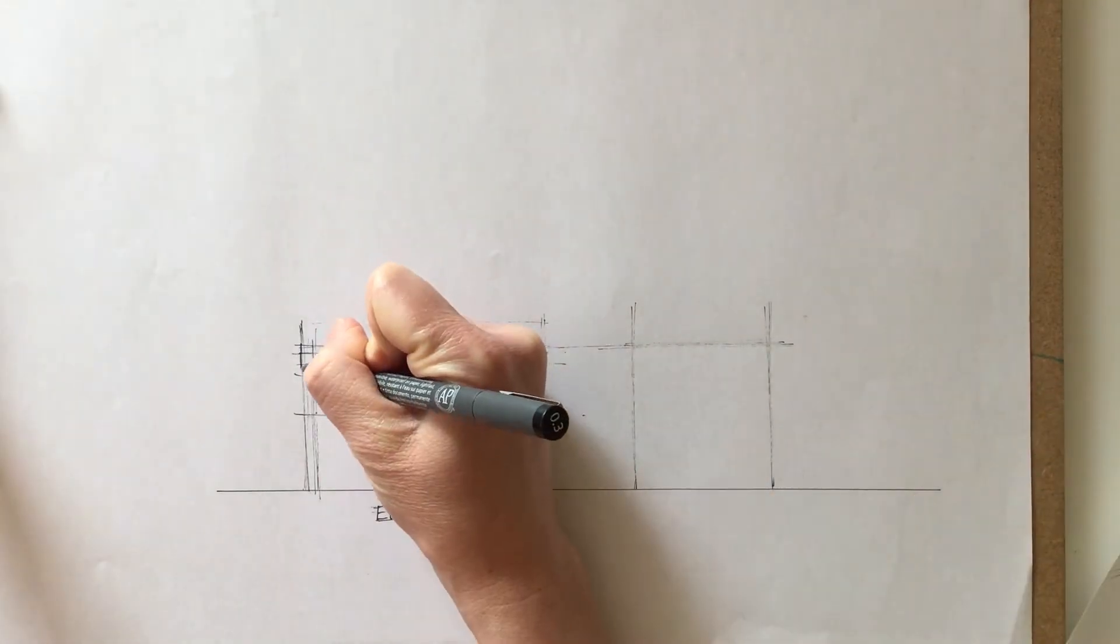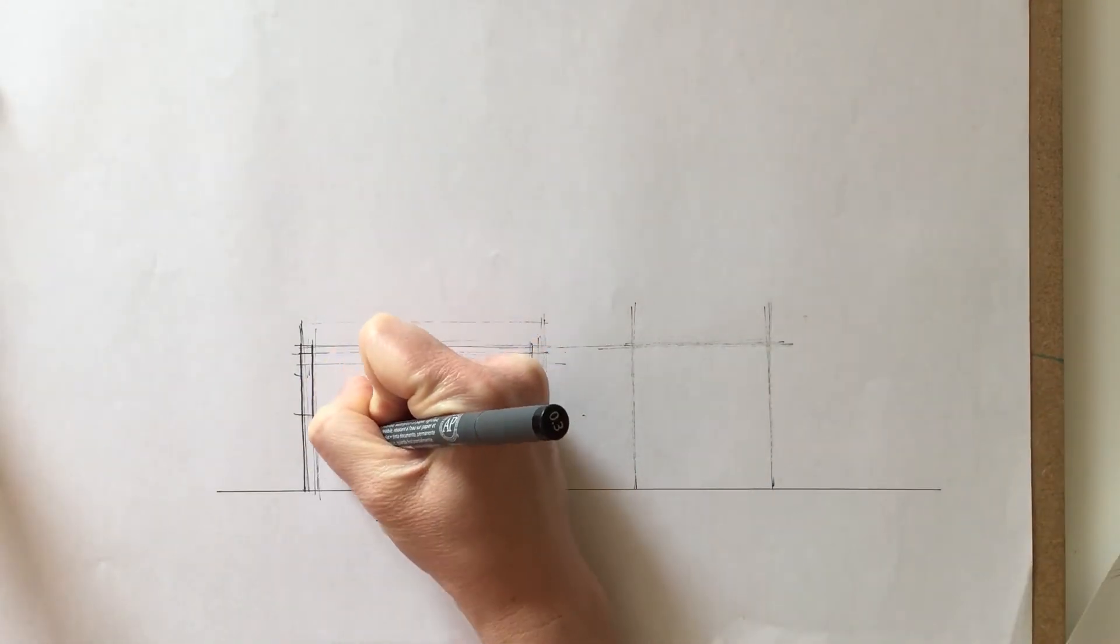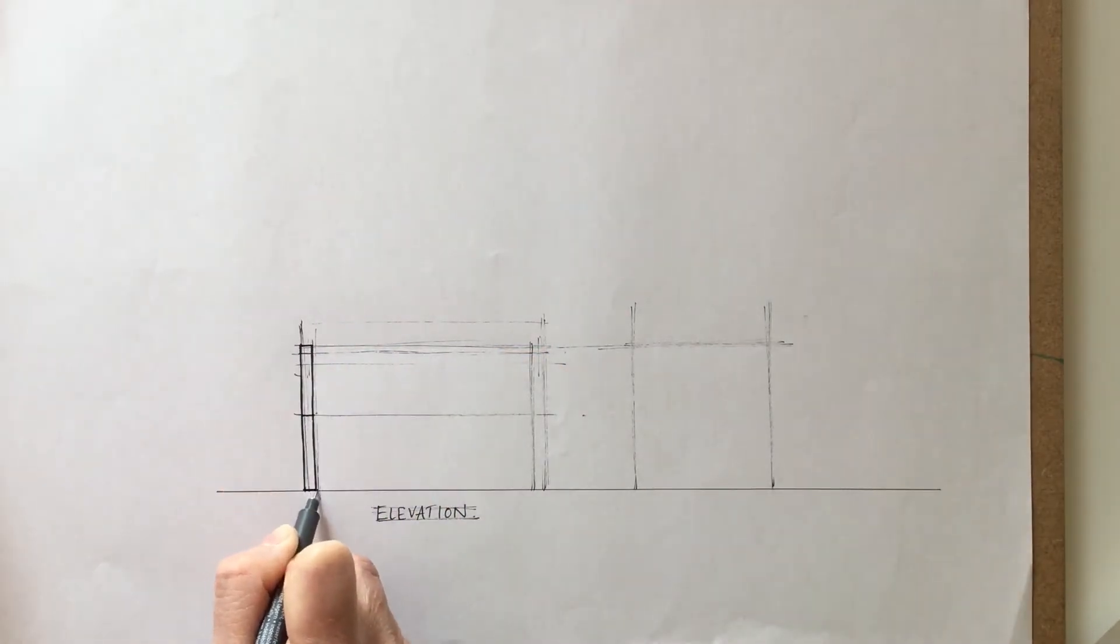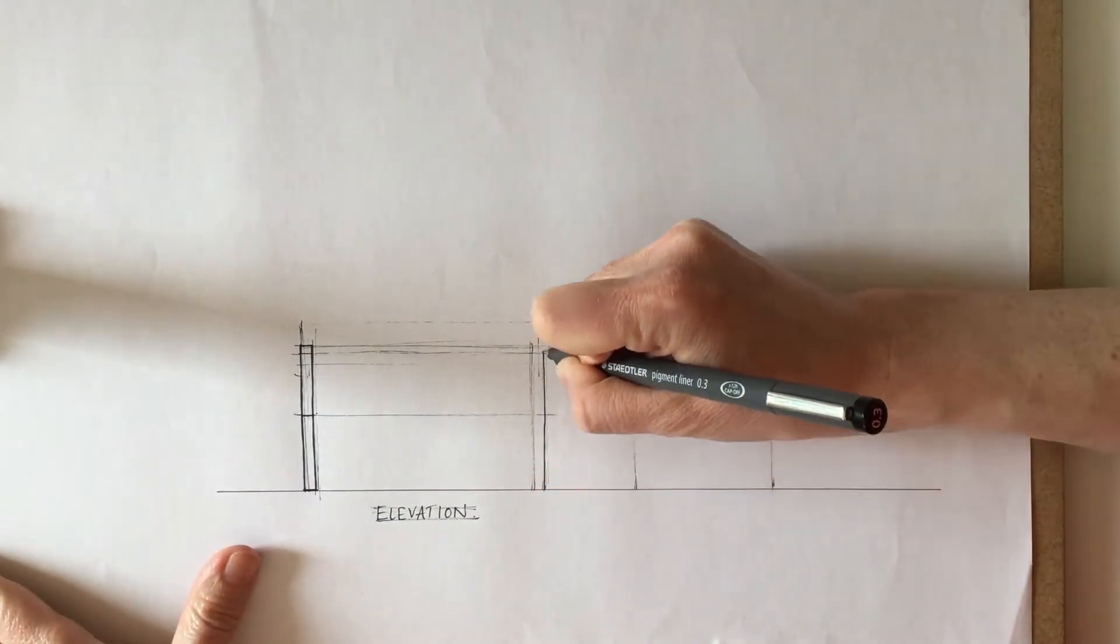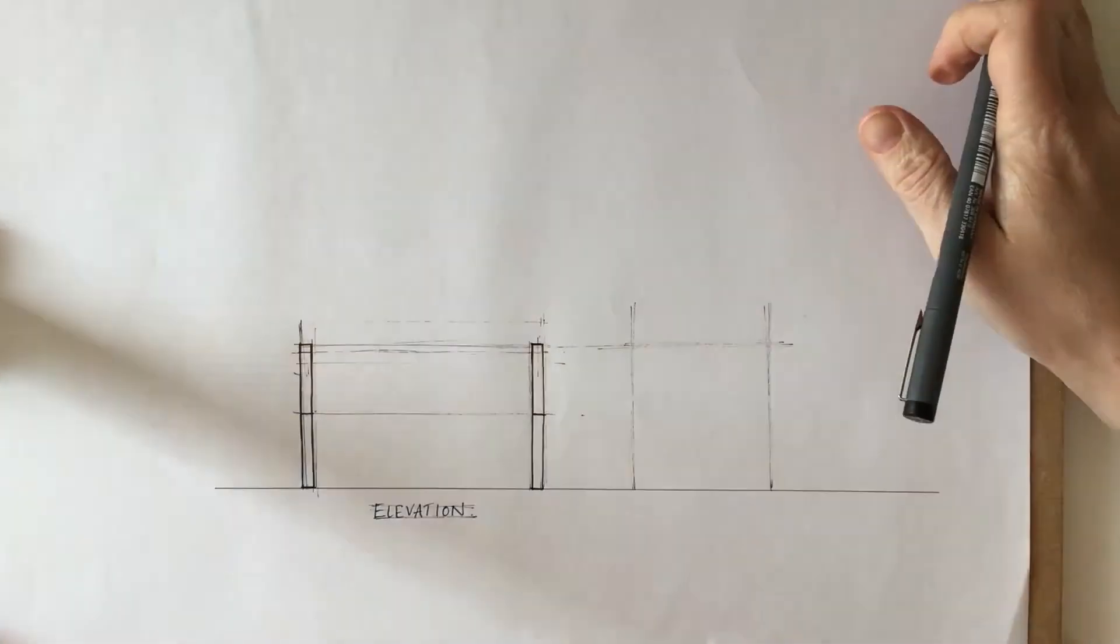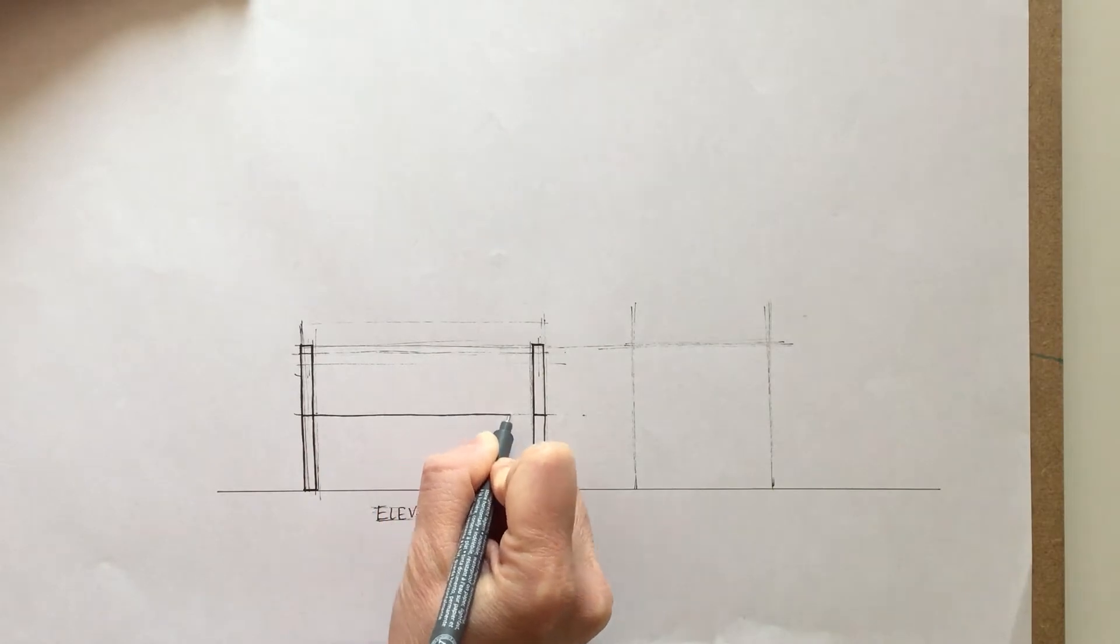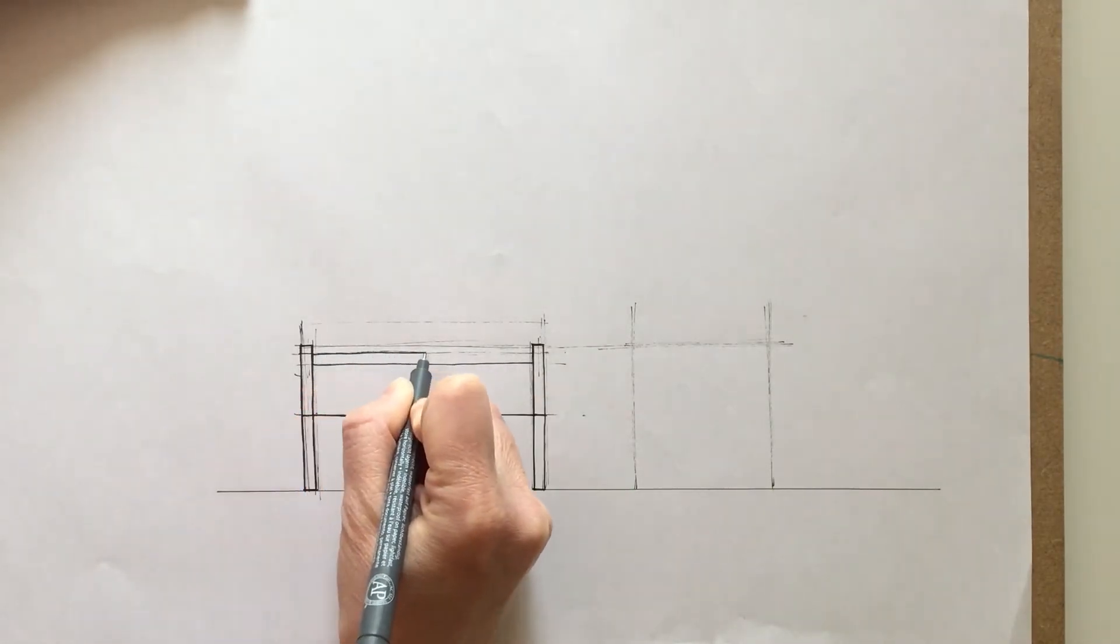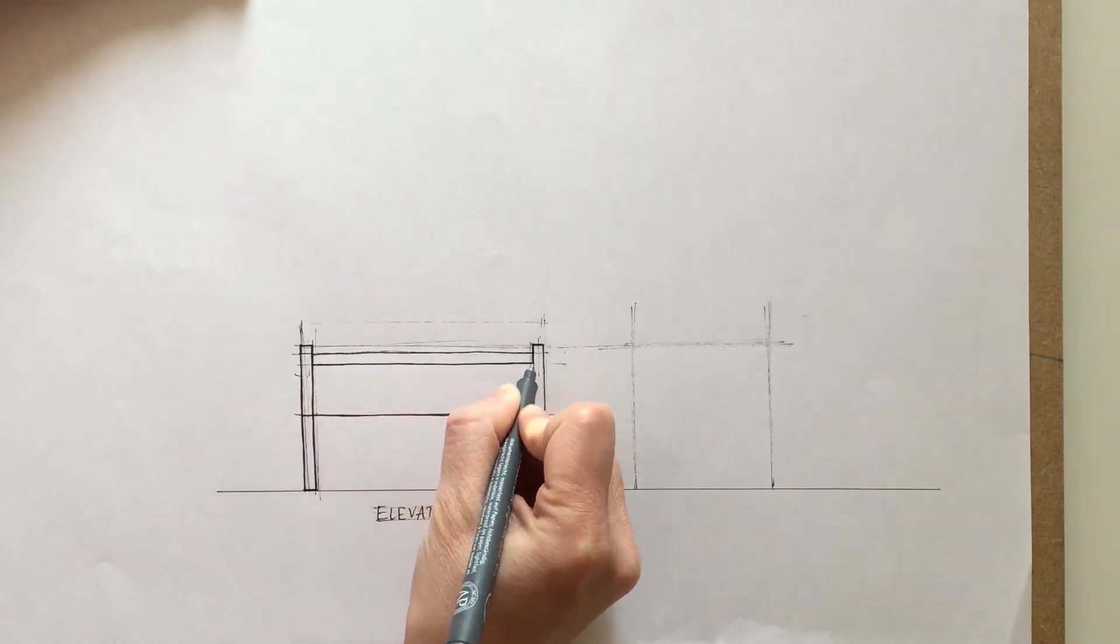It's got a front view called the elevation, a side view which is the end elevation, and a top view which is the plan. Each view will have different bits of information on it, and as you can see here when I'm drawing this front view in, you can see the two sides that are standing up and this here is the handle that goes across between them.